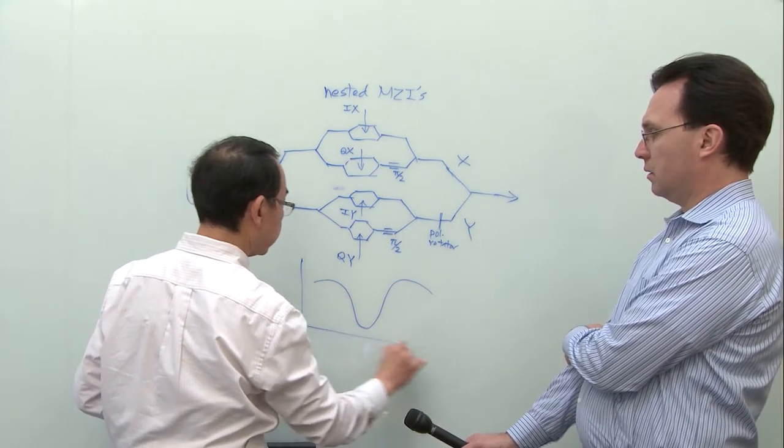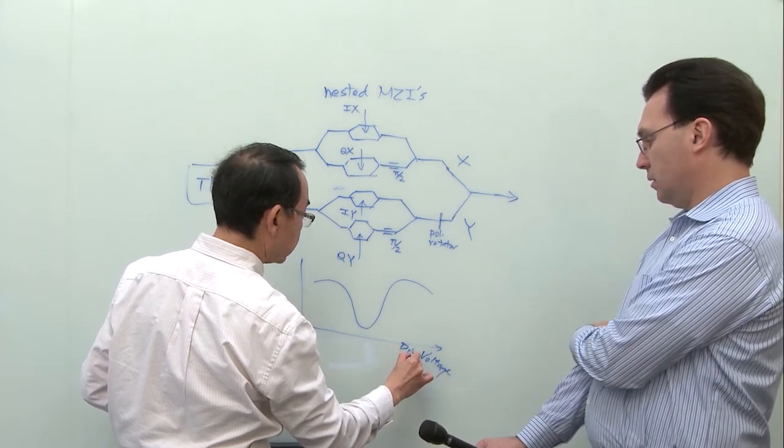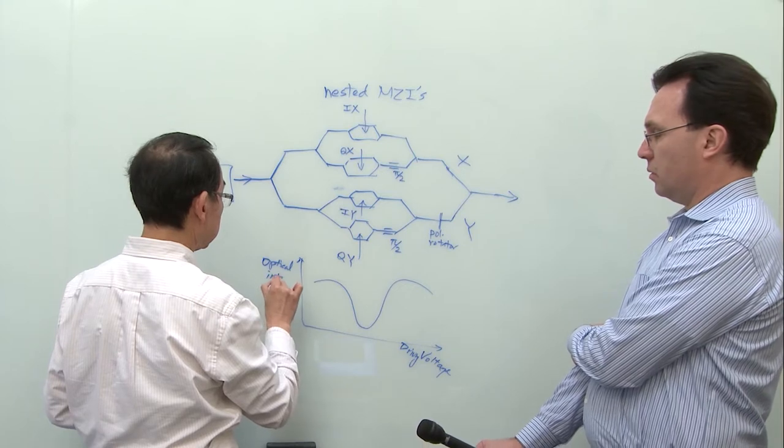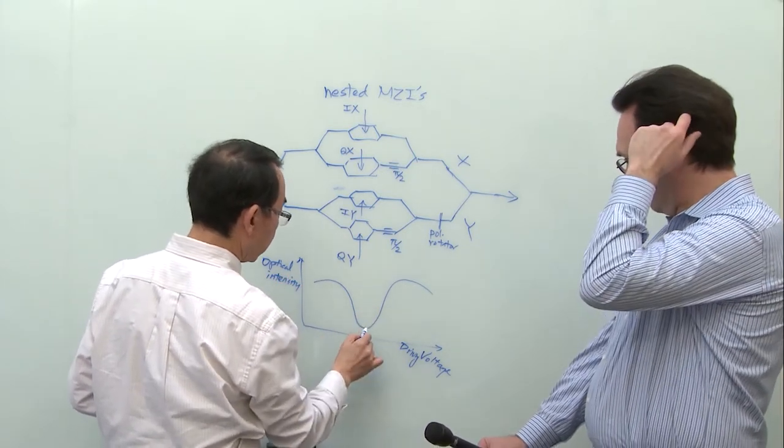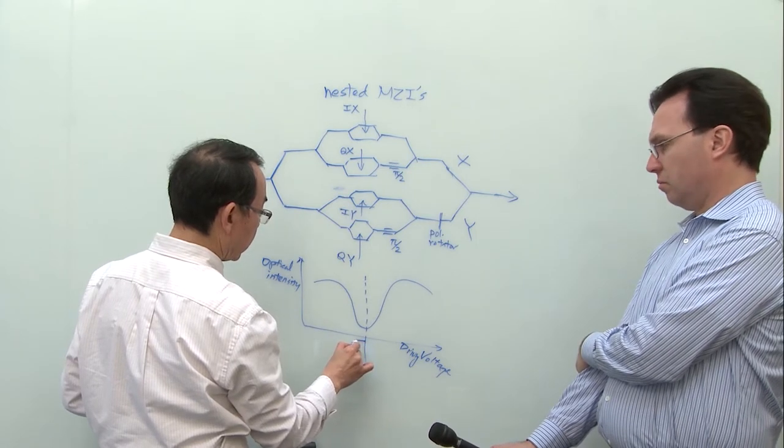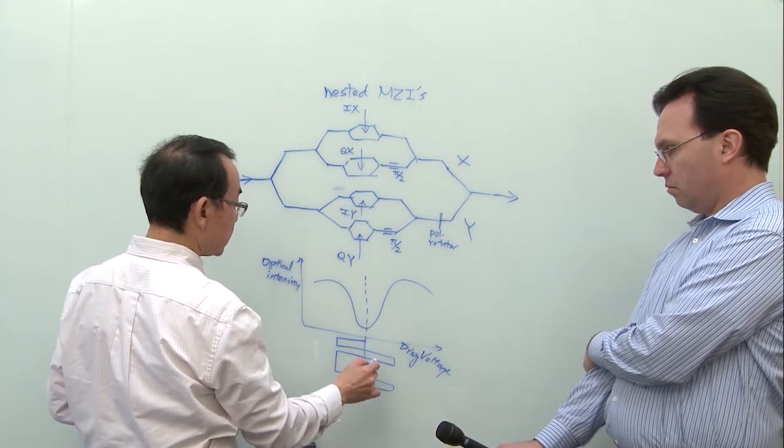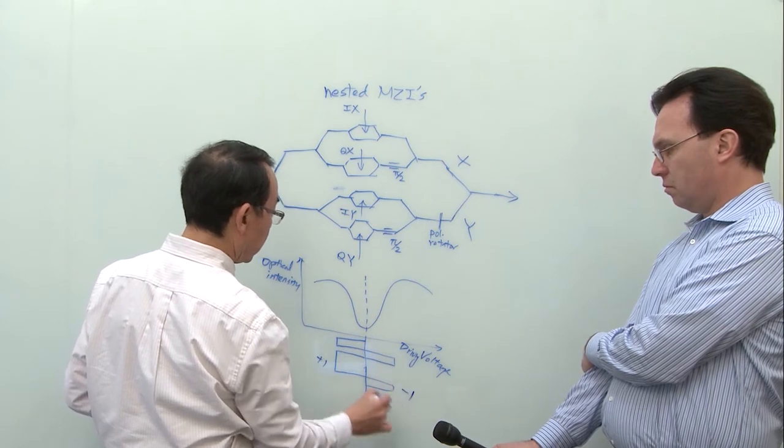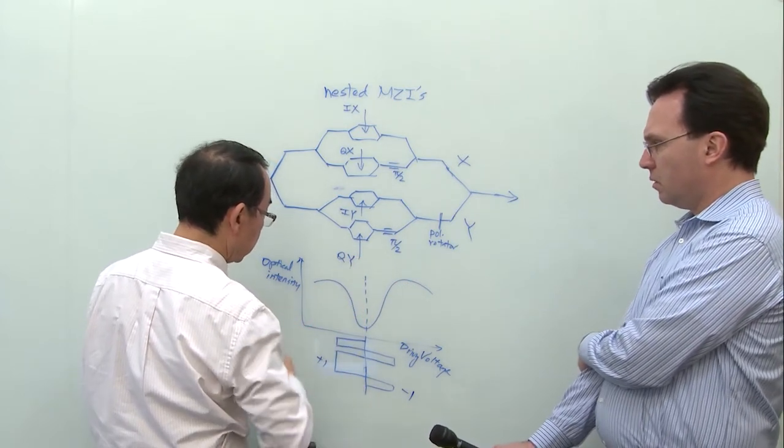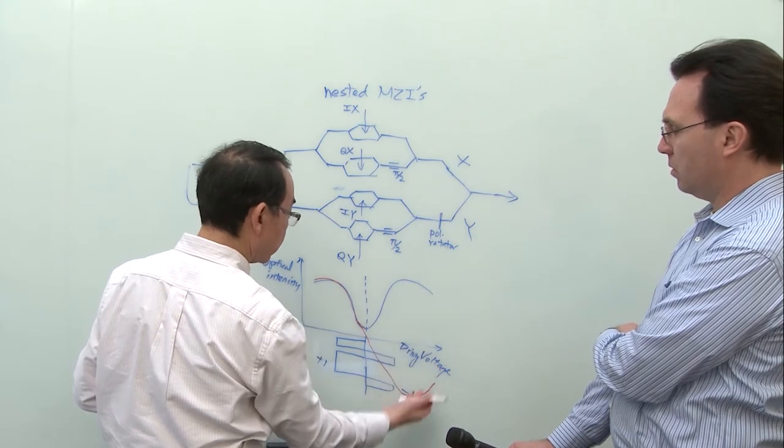This is called in-phase and it's X polarization. This is quadrature phase, X polarization, because you see there's a pi over two phase shift. That's why it's called Q, quadrature phase. And this one is in-phase. So same thing, this one is called Y. I put it here: Y, X, I, Y. Just following the nomenclature. In-phase for Y polarization and Q, Y. So I have four signals.